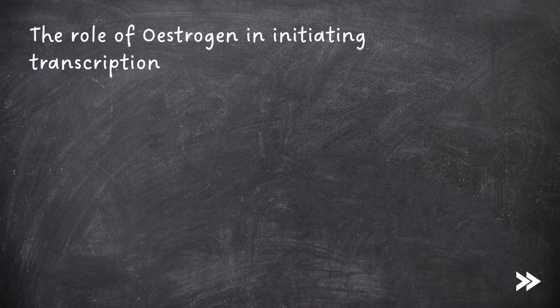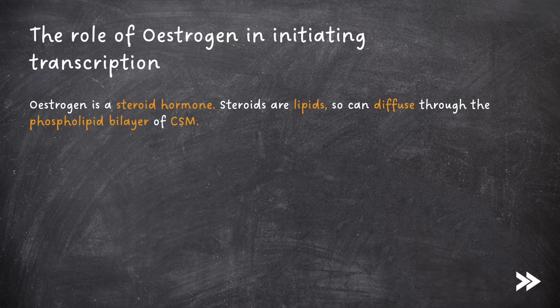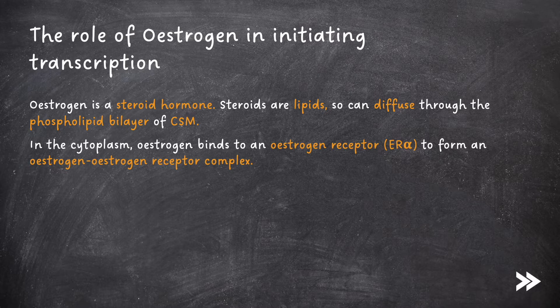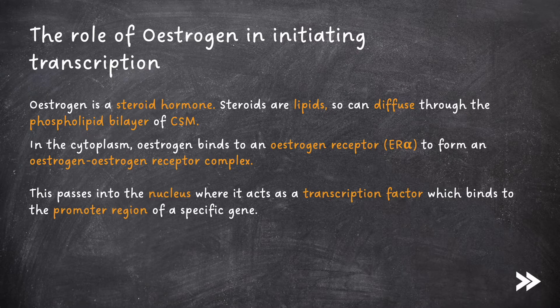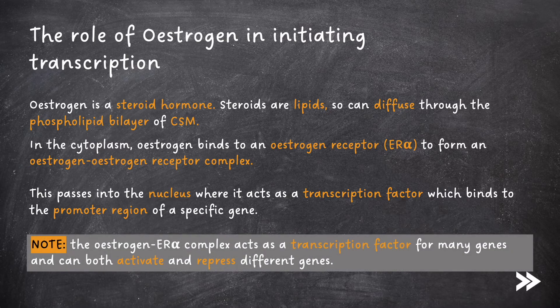The specification specifically mentions the role of the steroid hormone estrogen in initiating transcription. Oestrogen is a steroid hormone. Steroids are lipids, so can diffuse through the phospholipid bilayer of the cell surface membrane of cells. In the cytoplasm, estrogen binds to an estrogen receptor, also known as ER-alpha, to form an estrogen-estrogen receptor complex. This passes into the nucleus, where it acts as a transcription factor, which binds to the promoter region of a specific gene. Note that the estrogen-ER-alpha complex acts as a transcription factor for many genes, and can both activate and repress different genes.